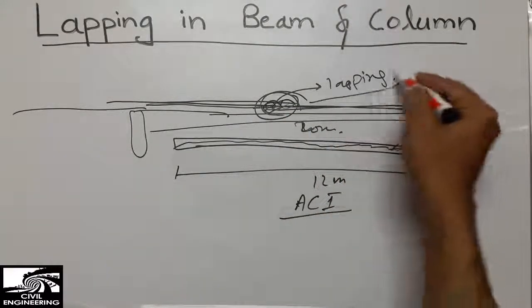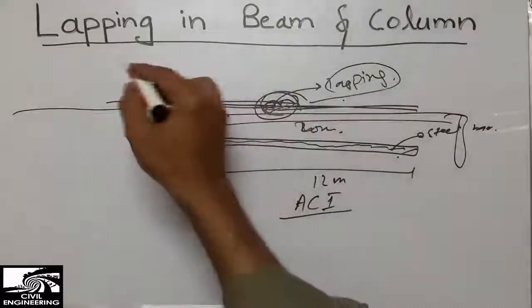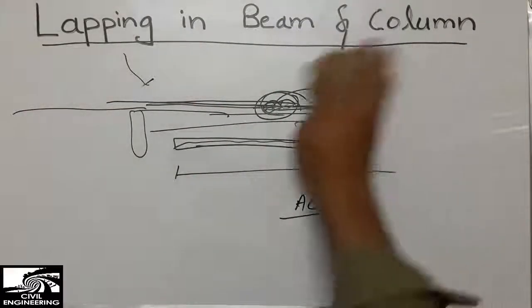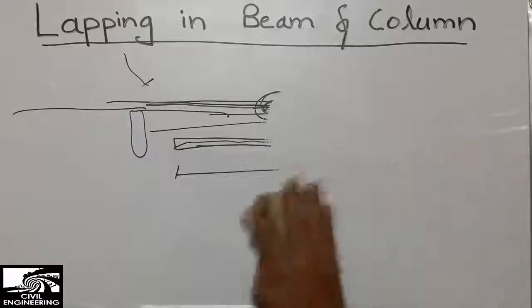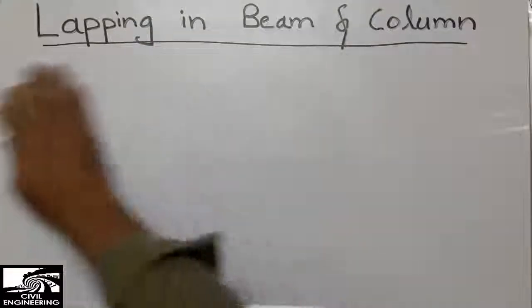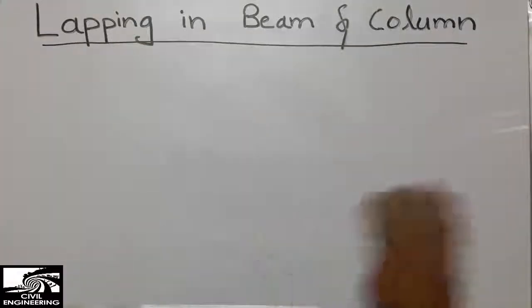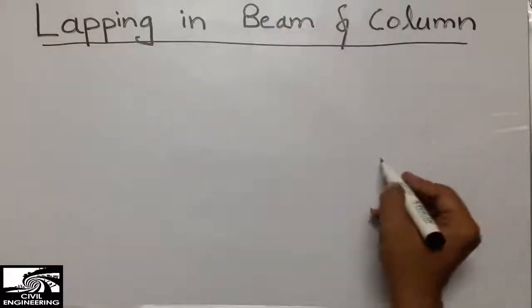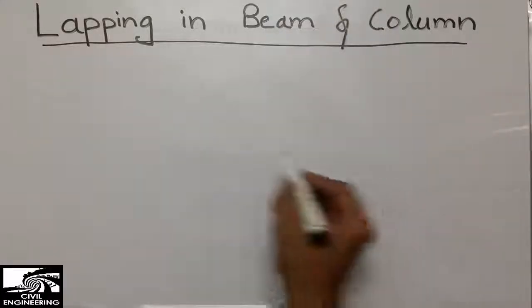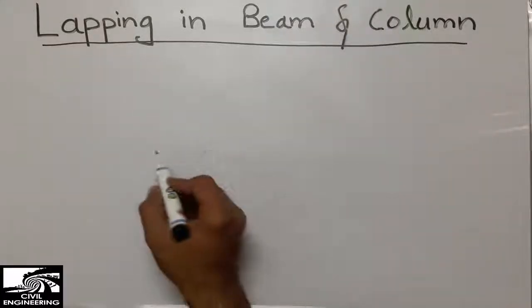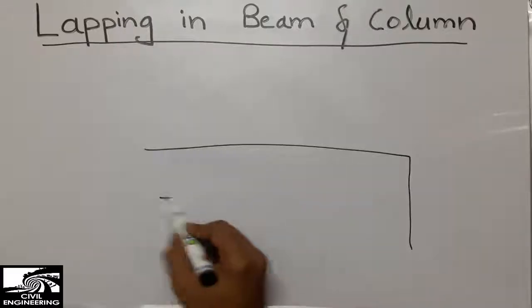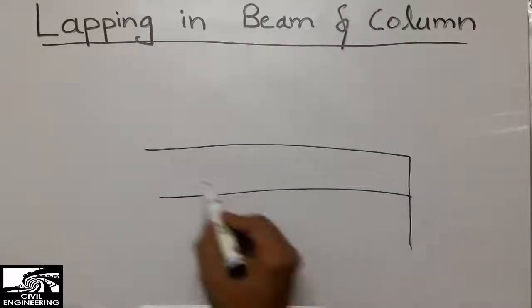This lapping is important because the length of one bar is not sufficient to run throughout the beam. We place another bar to continue the reinforcement throughout the beam. I will explain this in a bit more detail, now considering a multi-story building with different beams and columns at different stories.